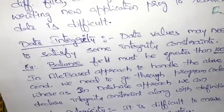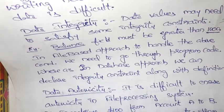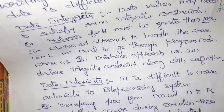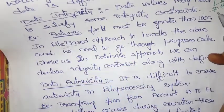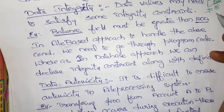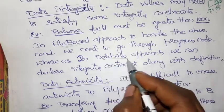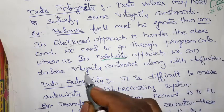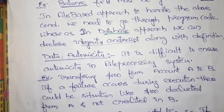For example, the balance field must be greater than one thousand. In a file-based approach, to handle such a condition we need to write it through the program code. Whereas in a database approach, we can declare the integrity constraint along with the definition — just simply mention the integrity constraint along with the query language.